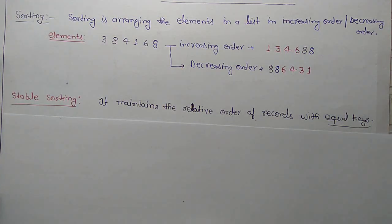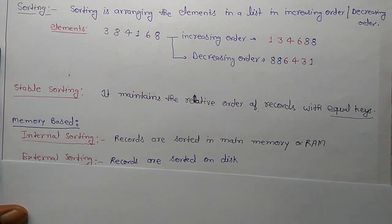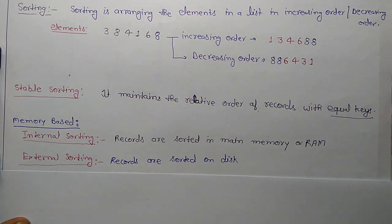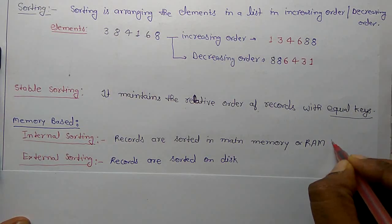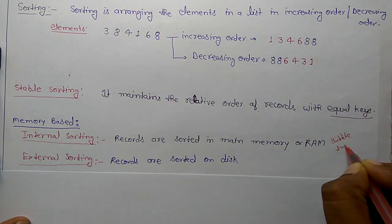Sorting can also be classified based on memory as internal and external sorting. In internal sorting, records are sorted in main memory, i.e., RAM — whatever record is there, you sort it in RAM. Examples of internal sorting are bubble sort and insertion sort.